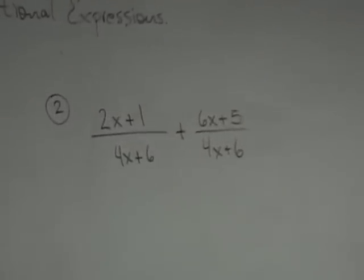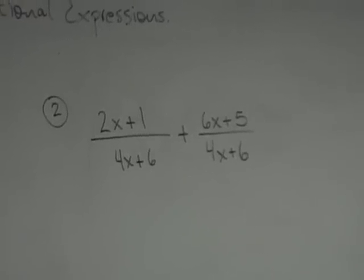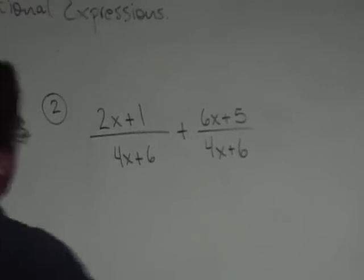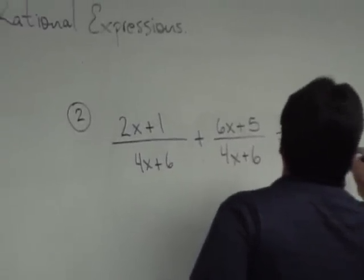So, suppose I gave you these two fractions. The first thing I want you to notice is that your denominators are the same. Right? And therefore, your answer is going to have what denominator? 4x plus 6. 4x plus 6. Exactly.